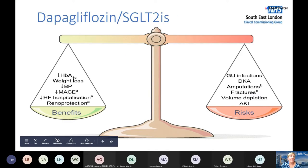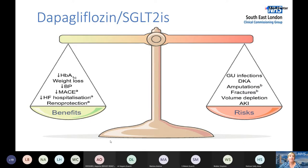When considering SGLT2 inhibitors like dapagliflozin, think about benefits and risks. Benefits include HbA1c and blood sugar control, weight loss, reduction in cardiovascular risk, a modest systolic blood pressure reduction of approximately 2–3 mmHg, reduced cardiovascular risk and hospitalisation, and more recently demonstrated renal protection. Dapagliflozin is not licensed in patients with heart failure if renal function is below GFR 30.